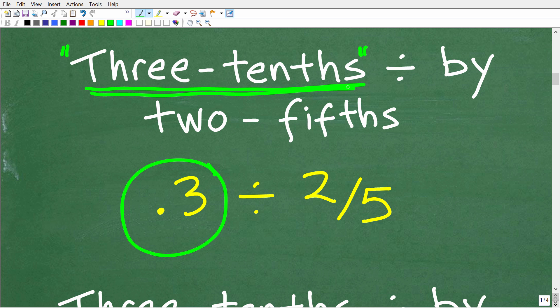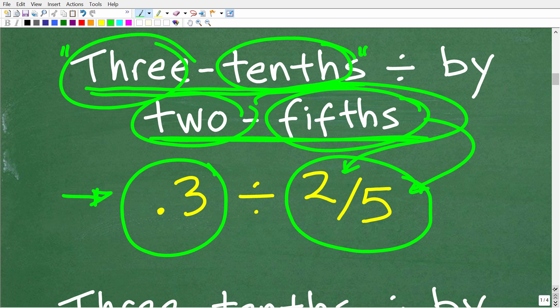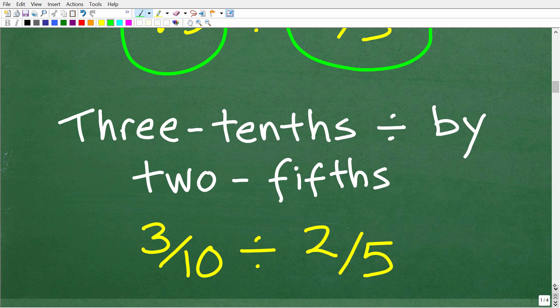One way we can think of three-tenths is as the decimal 0.3, and we can think of two-fifths as the fraction 2/5. Here we have a decimal and a fraction, and we don't want to work with one decimal and one fraction. We want to work with either all decimals or all fractions. An easy way to fix this is to write this decimal 0.3, or three-tenths, as a fraction. Just like we have two-fifths with two as the numerator and five as the denominator, we can do the same thing and write a fraction for three-tenths.